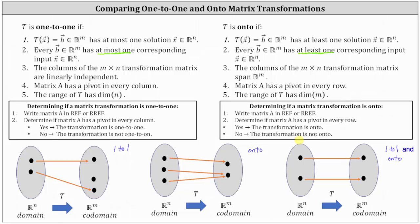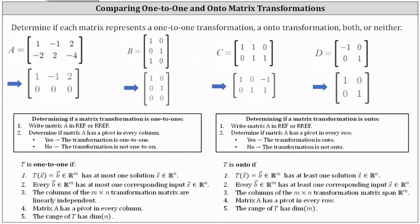Let's look at some examples. We are asked to determine if each matrix represents a one-to-one transformation, an onto transformation, both, or neither. Given matrices A through D, already written in reduced row echelon form: for matrix A, there is a pivot only in row one, column one. There is no pivot in every column or every row, so the transformation is neither one-to-one nor onto.